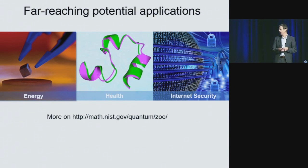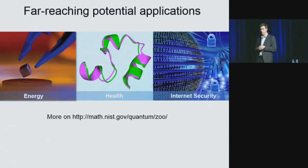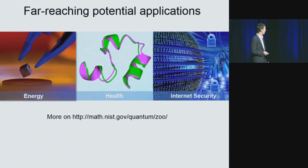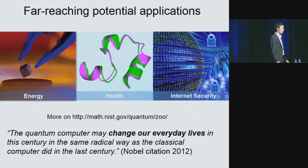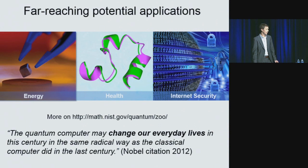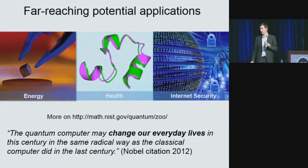Another class of applications is cryptography. There is a well-known algorithm for factoring large numbers efficiently on a quantum computer, which would break widely used public key systems like RSA. Many other important applications are under study, from machine learning to optimization. There is a whole zoo of quantum algorithms described online. This potential led the Nobel Prize committee to state that the quantum computer may change our everyday lives in this century in the same radical way as the classical computer did in the last century.